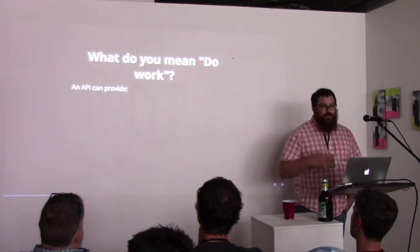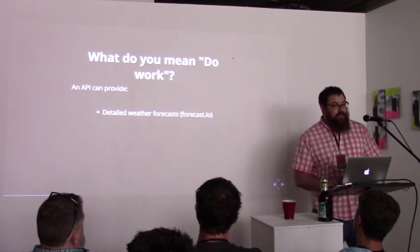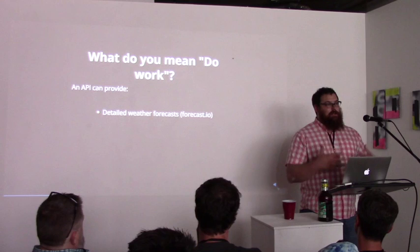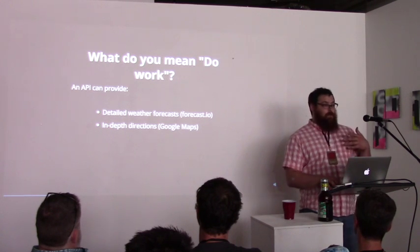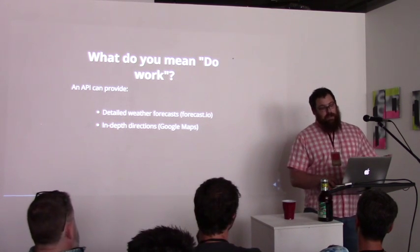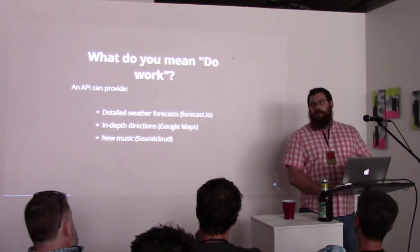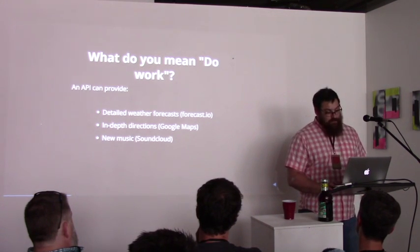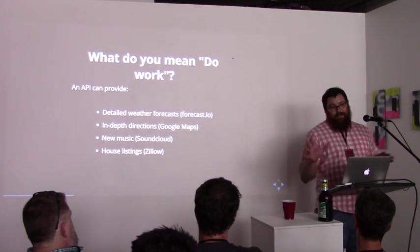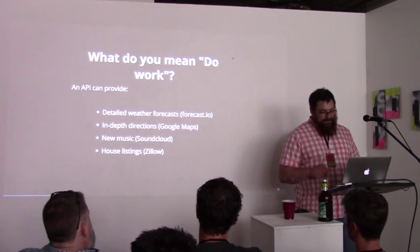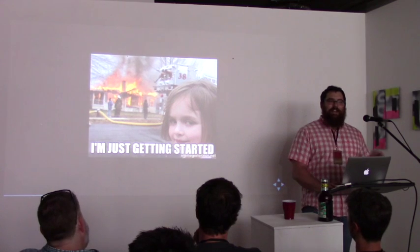So what is work, or do work? An API can provide detailed weather forecasts — there are services that will give you the weather for a micro-location, like your city block. You can get in-depth directions by querying the Google Maps API and displaying it how you see fit. You can use it to research new music — getting the latest out of SoundCloud. You can get house listings. I've done this because I did not like how Zillow presented their data, so I changed it up — I broke a few terms of service, but that's where it really gets going.